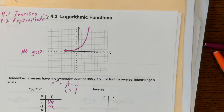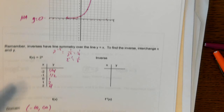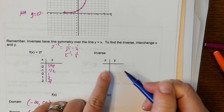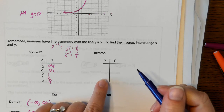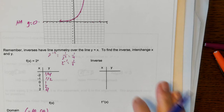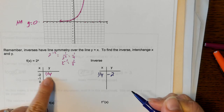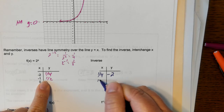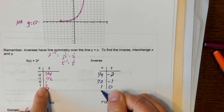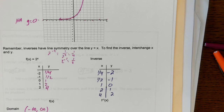What does that have to do with logarithms? Let's connect back to inverses. Inverse just means trade the x and y. If these are the ordered pairs in our original function y = 2^x, we already know what the ordered pairs for the inverse will be — we just don't know the equation yet. We know the point (1/4, -2) will be on this function, (1/2, -1), (1, 0), (2, 1), and (4, 2) will all be on the inverse function.